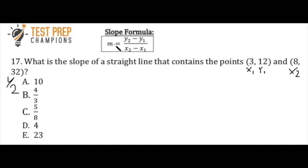And the formula is simply m, which is, we write slope as an m, so it's slope equals y2 minus y1 over x2 minus x1.